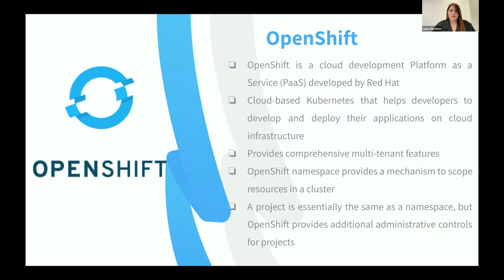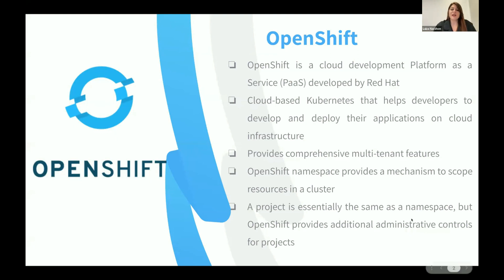Another important concept for this research is the OpenShift namespace, which was inherited from Kubernetes. A namespace is the place where we can isolate resources in a cluster and scope them for specific groups assigned to that namespace. For people familiar with OpenShift, the namespace is also known as a project. In OpenShift, the namespace provides additional administrative control on the project within the namespaces.